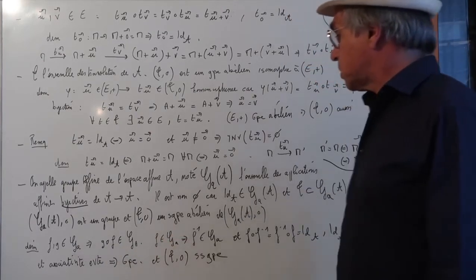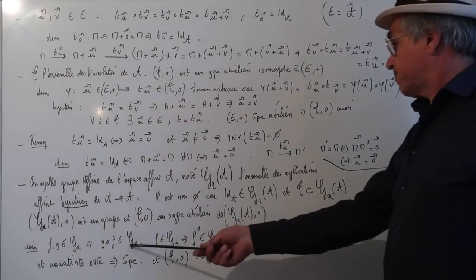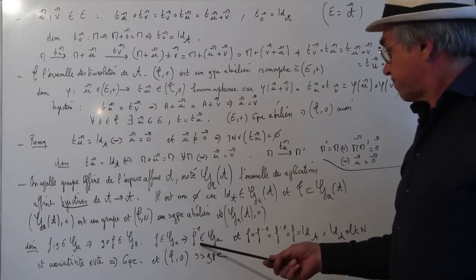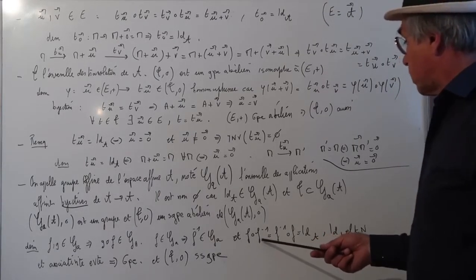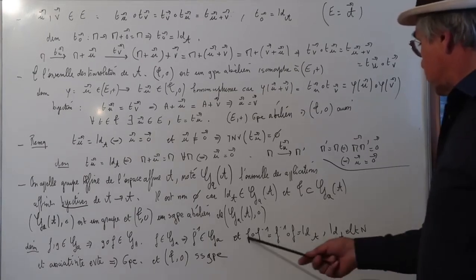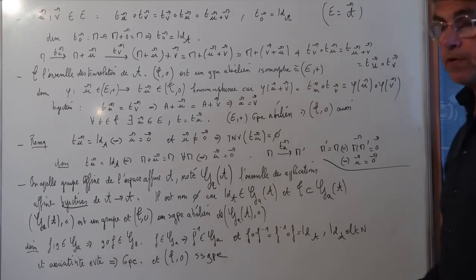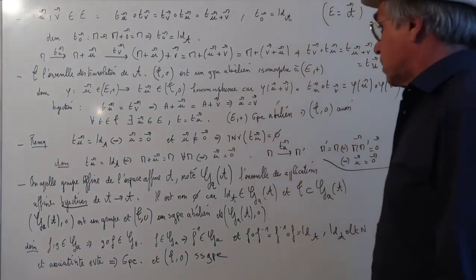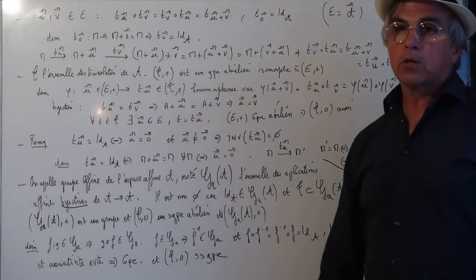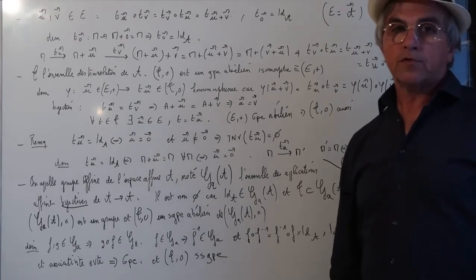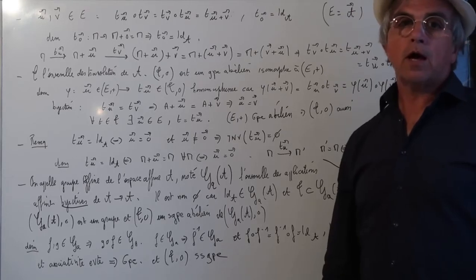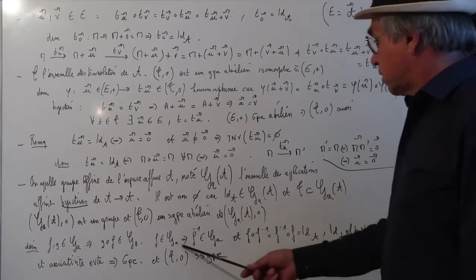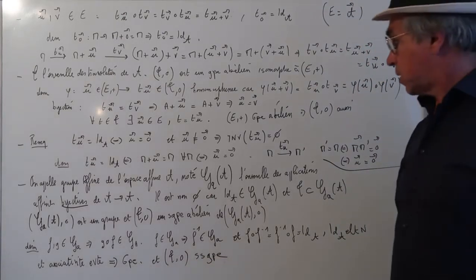Démonstration : si F et G sont affines, G∘F est affine. Si F appartient à GA, elle est affine bijective, donc sa réciproque est affine bijective et appartient à GA. On a F∘F⁻¹ = identité et F⁻¹∘F = identité. L'identité est l'élément neutre. L'associativité vient de la composition d'applications, c'est-à-dire que (H∘G)∘F = H∘(G∘F). Donc on a bien un groupe, et le groupe des translations T est inclus dans GA, c'est donc un sous-groupe de GA.